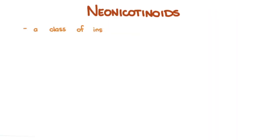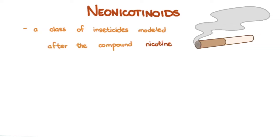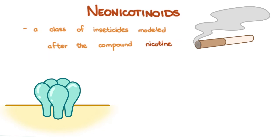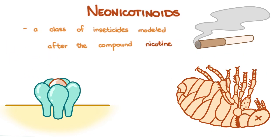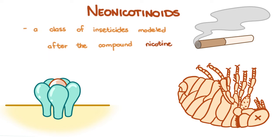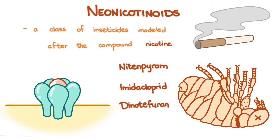Neonicotinoids are a class of insecticide modeled after the compound nicotine. Thus, they are agonists of nicotinic acetylcholine receptors, inhibiting cholinergic transmission leading to paralysis and death. Examples include nitenpyram, given orally; imidacloprid, which is a spot-on; and dinotefuran, which is also a spot-on. Dinotefuran is derived from the acetylcholine molecule instead of nicotine, but it's still under the neonicotinoids category.